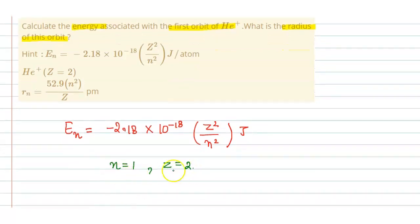If we put these values into the formula, E1 equals minus 2.18 into 10 raised to the power of minus 18 z square which is joules. So it will be equal to minus 8.72 into 10 raised to the power of minus 18 joules.